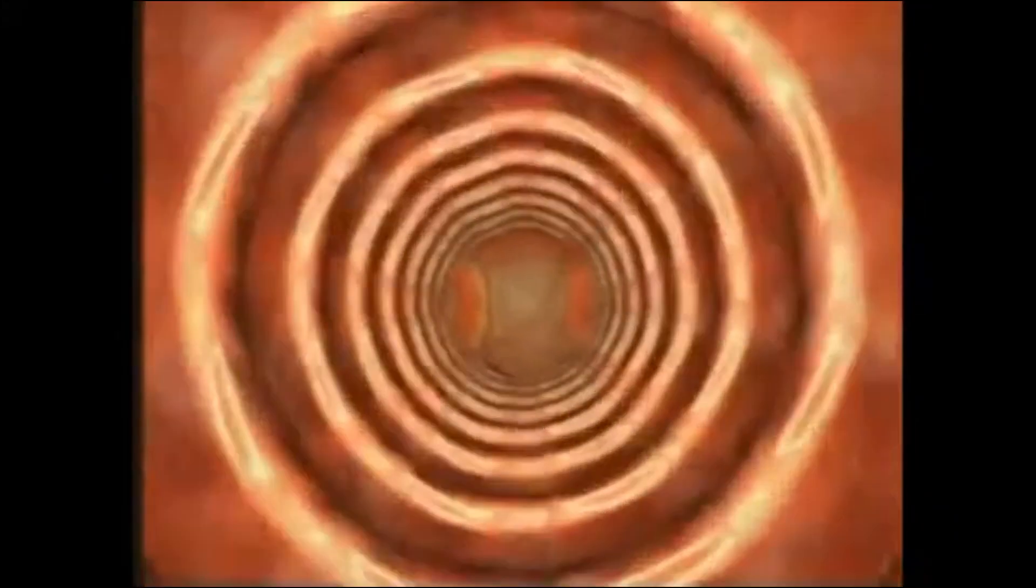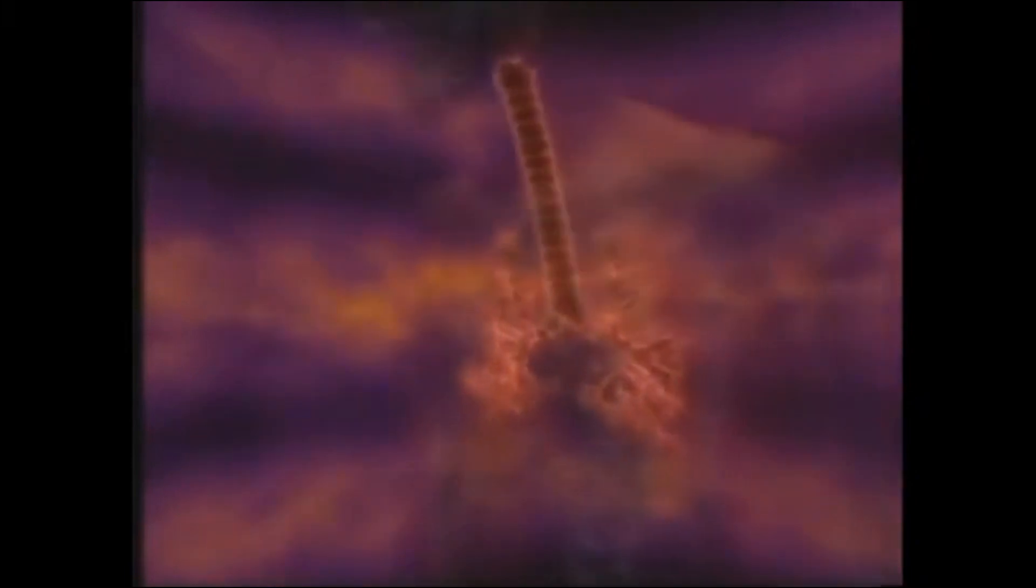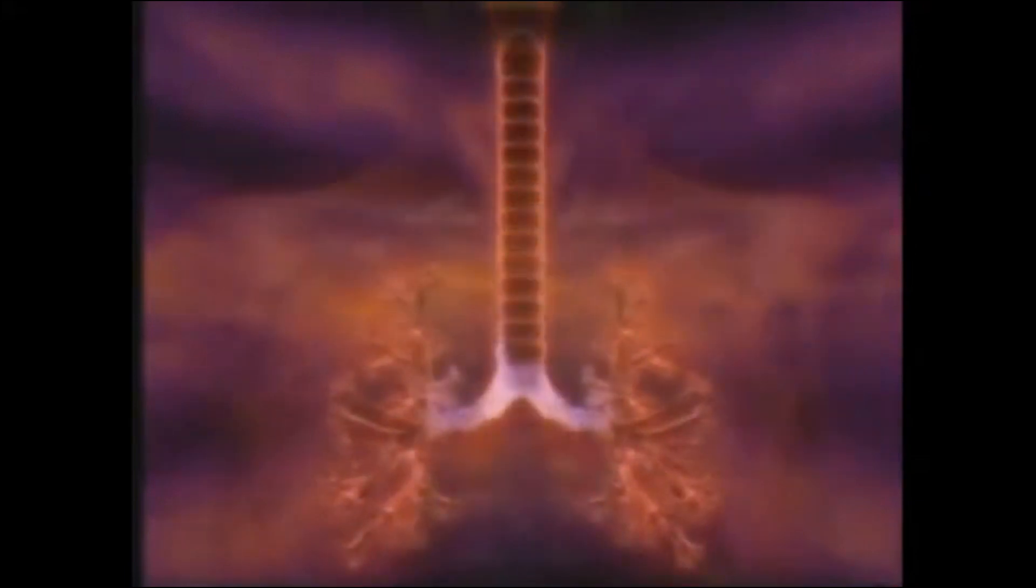Nefes borusu halkalı bir yapıya sahip. Kıkırdak bir dokudan oluşur. Bu da farklı yönlere hareket imkanı sağlar. Eğer nefes borusunun yapısı etten olsaydı, yumuşak yapısı nedeniyle sürekli tıkanırdı. Bu da nefes almamızı imkansız hale getirirdi. Eğer kemik gibi sert bir maddeden yapılmış olsaydı, bu sefer hareketlerimiz büyük ölçüde sınırlanırdı. Ancak nefes borusunu oluşturan kıkırdak yapı hem her türlü harekete uyum gösterir, hem de esnekliği sayesinde daima açık kalır.